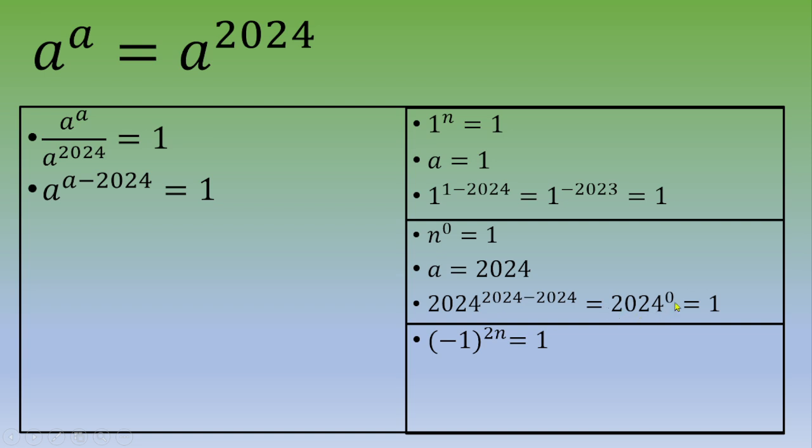What about the third case? If we apply it, the value of a is -1, and at the same time the power is -1 - 2024 = -2025. And 2025 is not an even number, so you can disregard this third case.